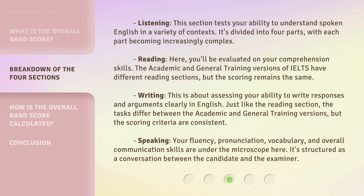Listening: This section tests your ability to understand spoken English in a variety of contexts. It's divided into four parts, with each part becoming increasingly complex. Reading: Here, you'll be evaluated on your comprehension skills. The academic and general training versions of IELTS have different reading sections, but the scoring remains the same. Writing: This is about assessing your ability to write responses and arguments clearly in English. Just like the reading section, the tasks differ between the academic and general training versions, but the scoring criteria are consistent. Speaking: Your fluency, pronunciation, vocabulary, and overall communication skills are under the microscope here. It's structured as a conversation between the candidate and the examiner.